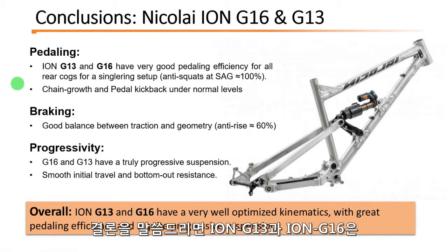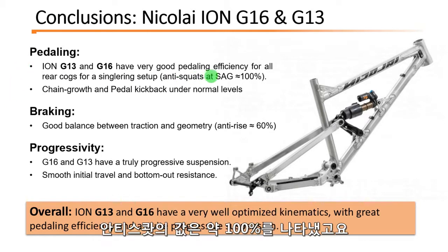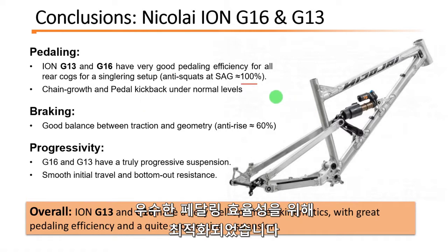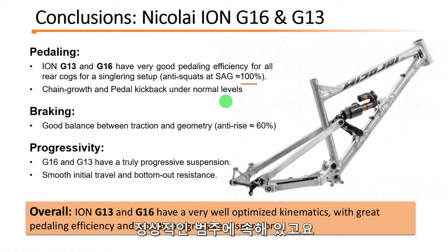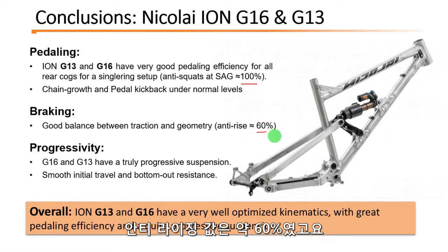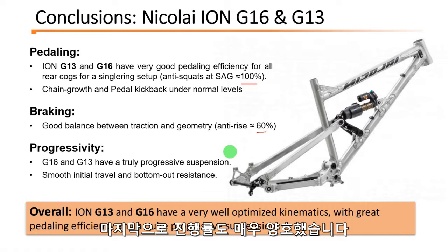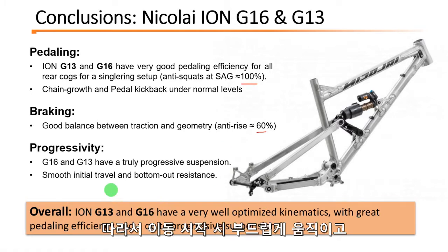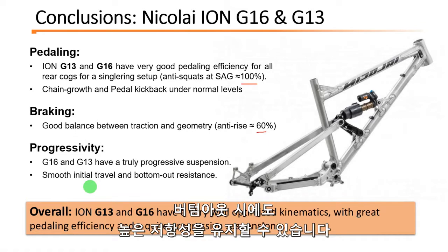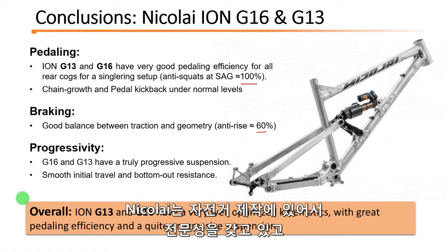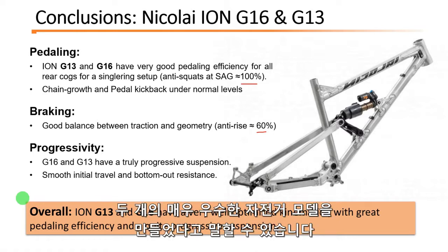To conclude: both ION G13 and G16 have very good pedaling efficiency with anti-squat around 100%, and the chain growth and pedal kickback are very well optimized — under normal levels. The braking is good, with a solid balance between traction and geometry, with anti-rise around 60%, a normal value for a horselink bike. The progressivity is quite substantial — these suspensions are truly progressive without being too much, giving you a smooth initial travel and good bottom-out resistance at the same time. Overall, Nikolai knows what they are doing and made two great bikes with very well optimized kinematics.